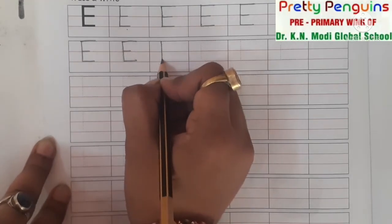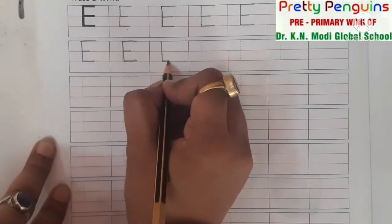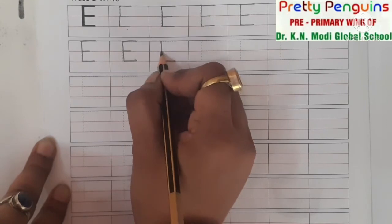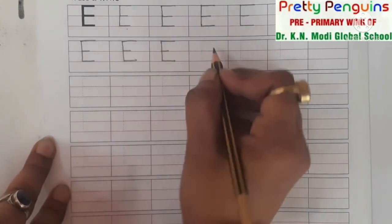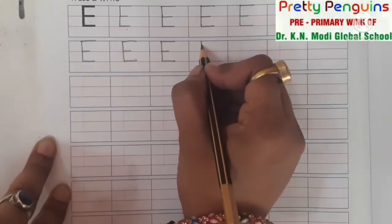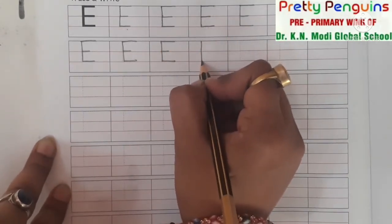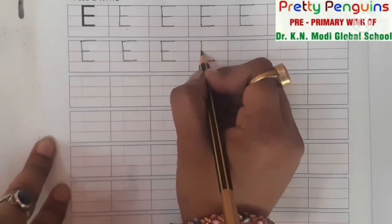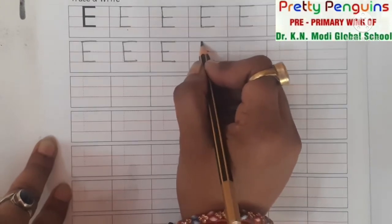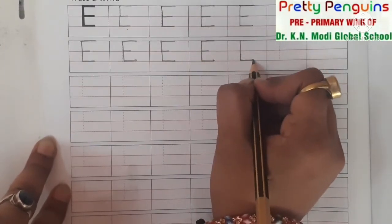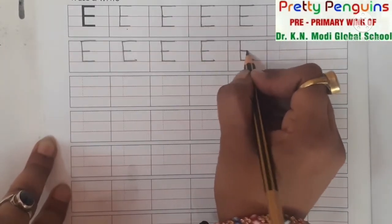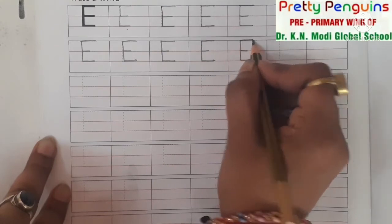You all have an eraser, right? And you also use it. Aapko sab eraser use karte ho na? E is for eye. How many eyes do we have? Tell me. We have two eyes. Kitne eyes hain? Two eyes. Okay?